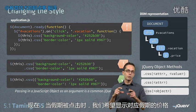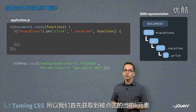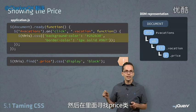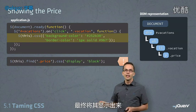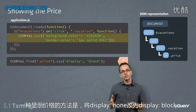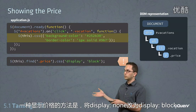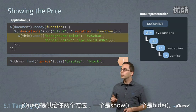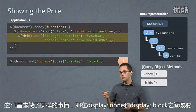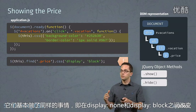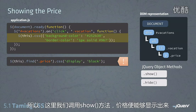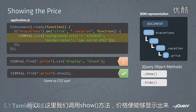Now when our vacations are clicked, we want to show the price for that vacation. So we're going to take this — which is the current li that was clicked — and we're going to find inside of it the price class, and then we want to display it. One way we can do that is changing it from display none to display block. However, there's a better way. jQuery gives you two methods, one called show and one called hide, and they change it between display none and display block. So here we call the show method, and it's going to display the price for us.